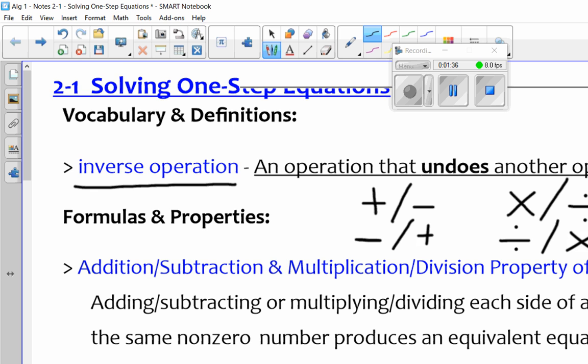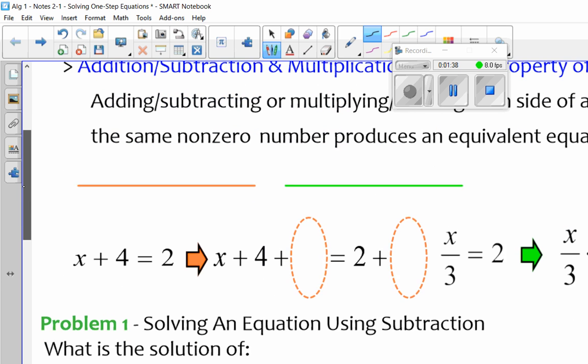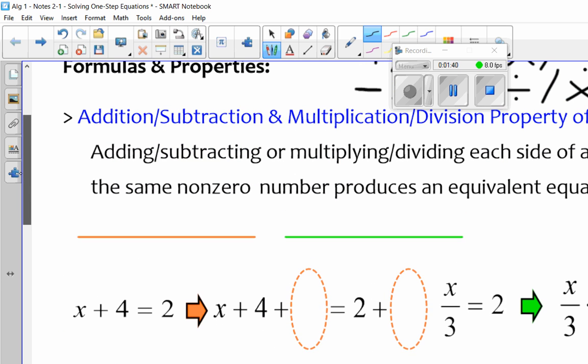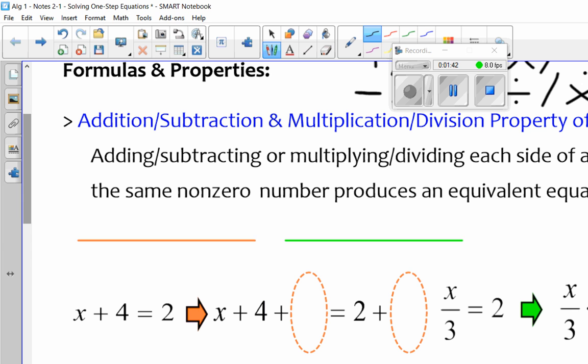If you could go ahead and write in this definition too, addition, subtraction, and multiplication, division property of equality. Adding and subtracting or multiplying and dividing each side of an equation by the same non-zero number produces an equivalent equation.